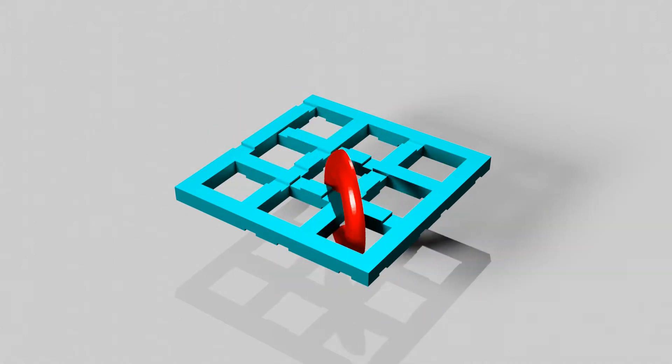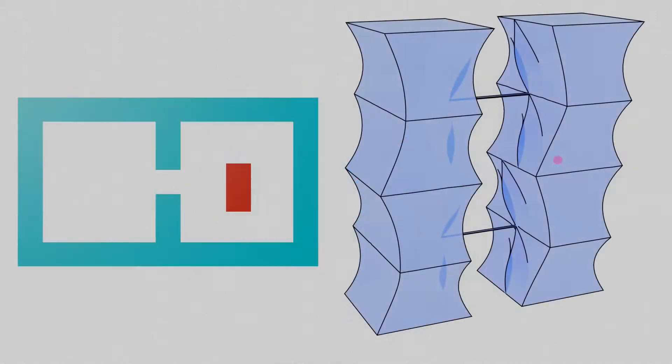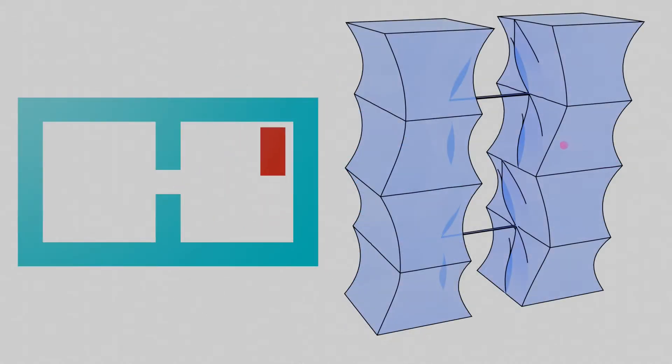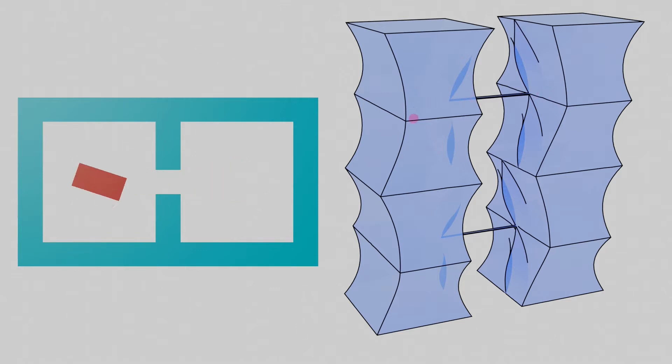We solve challenging disentanglement puzzles. This 2D example shows the difficulty. Puzzle configuration spaces have hard-to-find narrow tunnels that connect large bubbles of free motion.